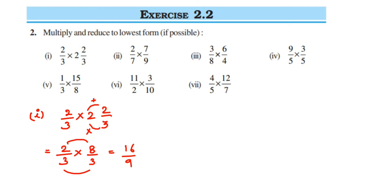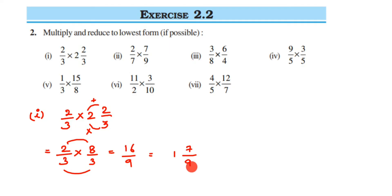We have to convert 16/9 back into a mixed fraction, because it is an improper fraction — remember, when the numerator is greater than the denominator it's called improper, and all mixed fractions are improper when opened up. With 9 in the denominator, we check the 9 times table for the number closest to 16: 9 × 2 = 18 is too big, so we take 9 × 1 = 9. To get from 9 to 16 we need 7, so the answer is 1⁷/9.